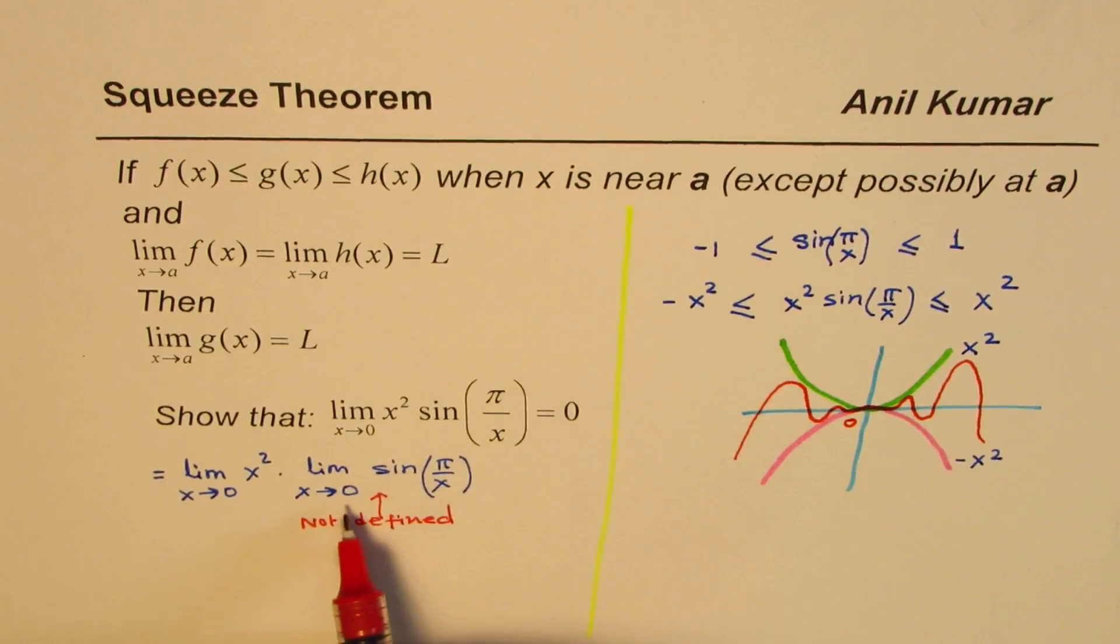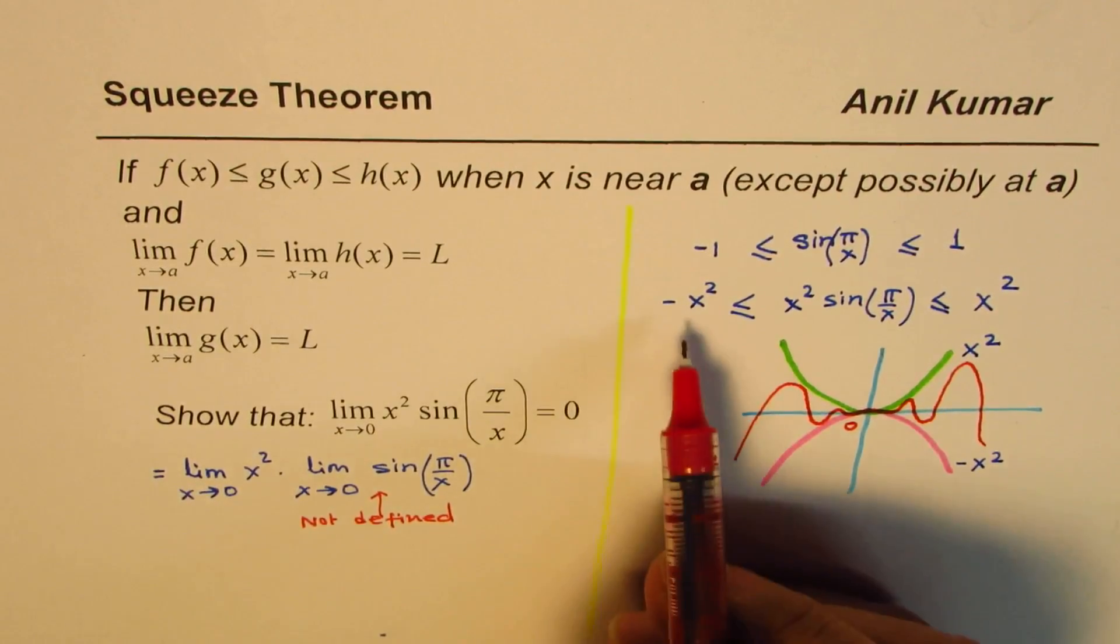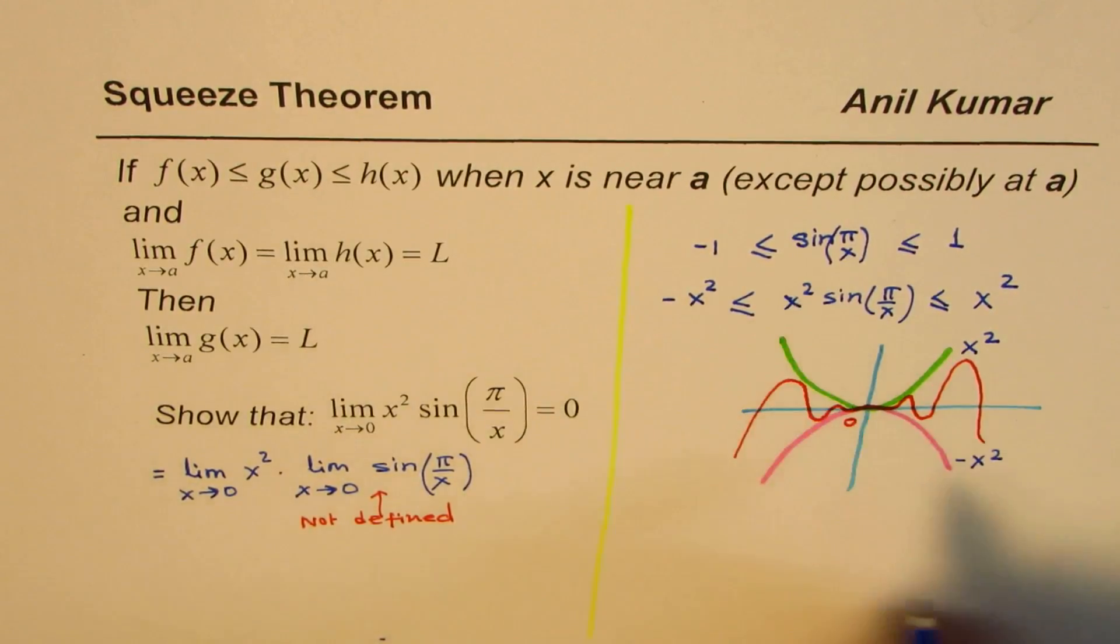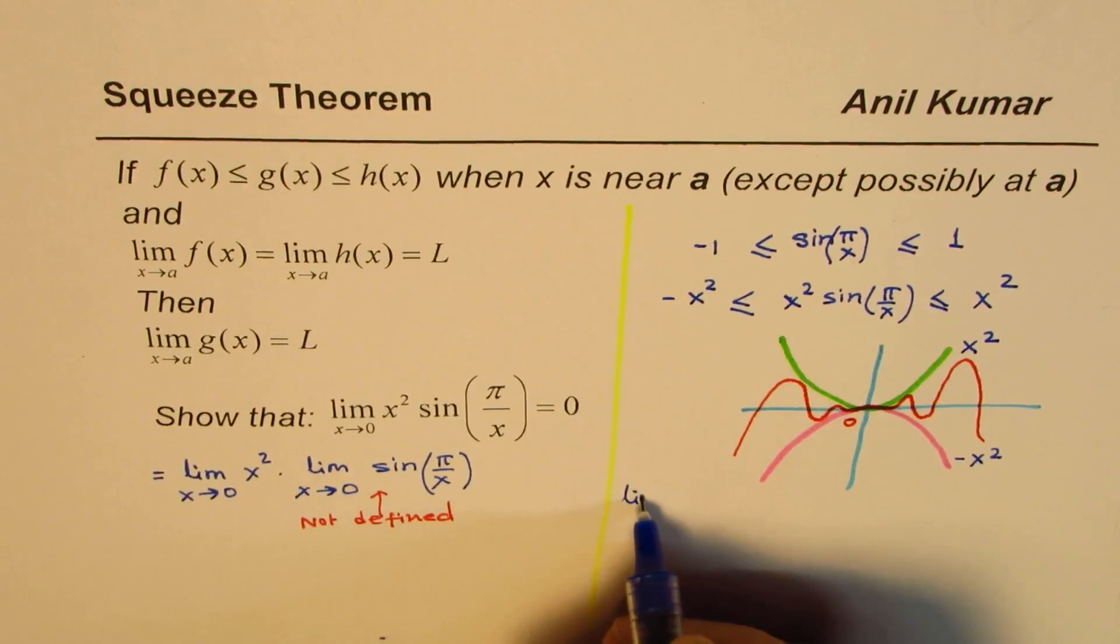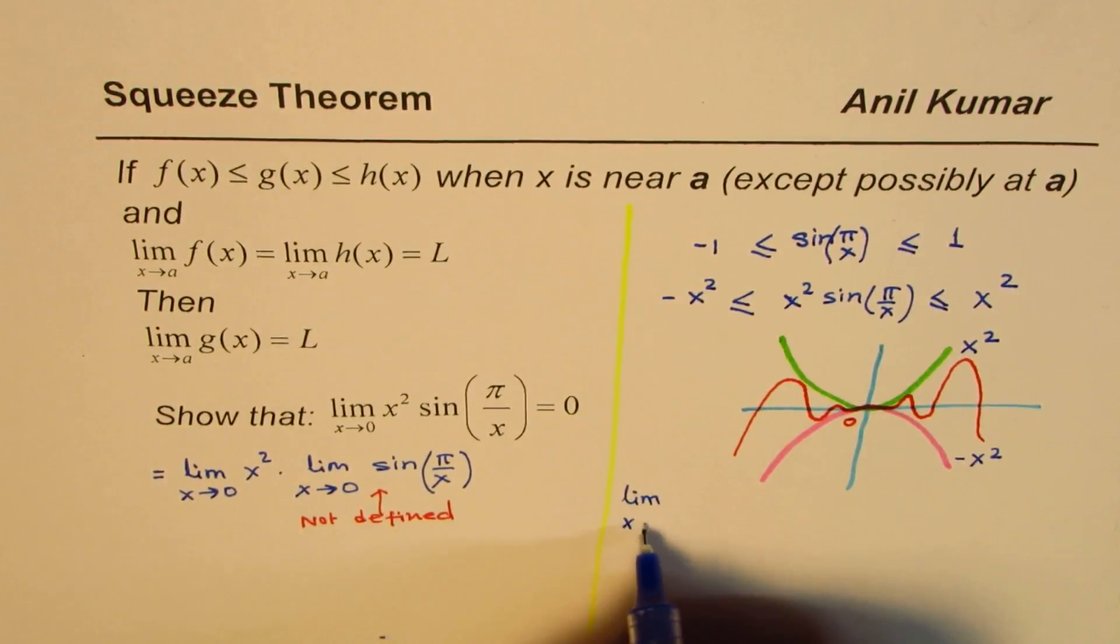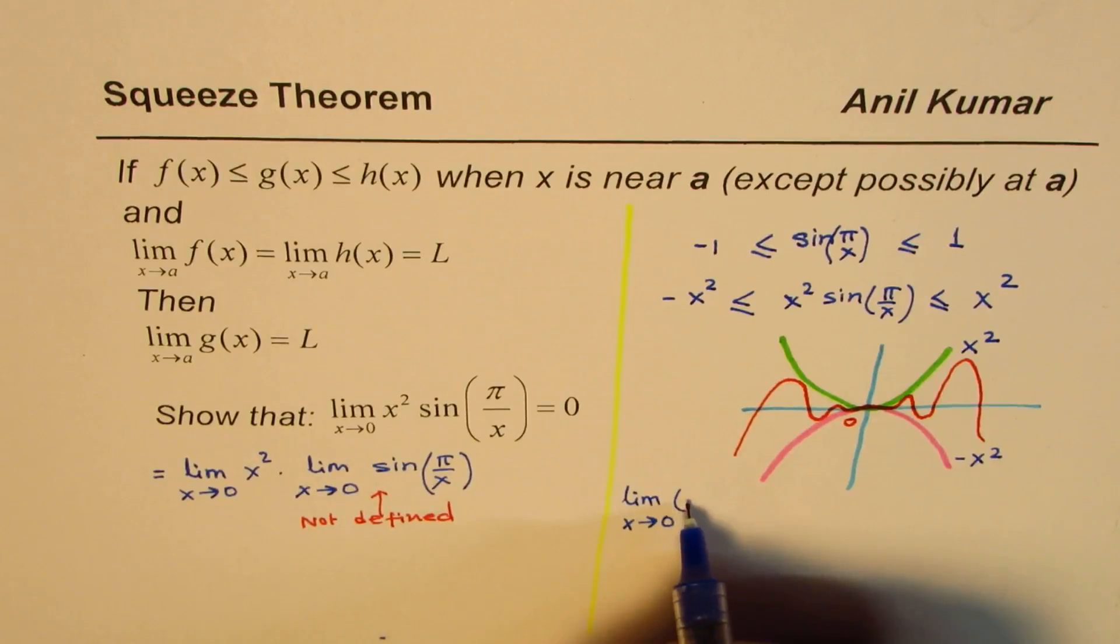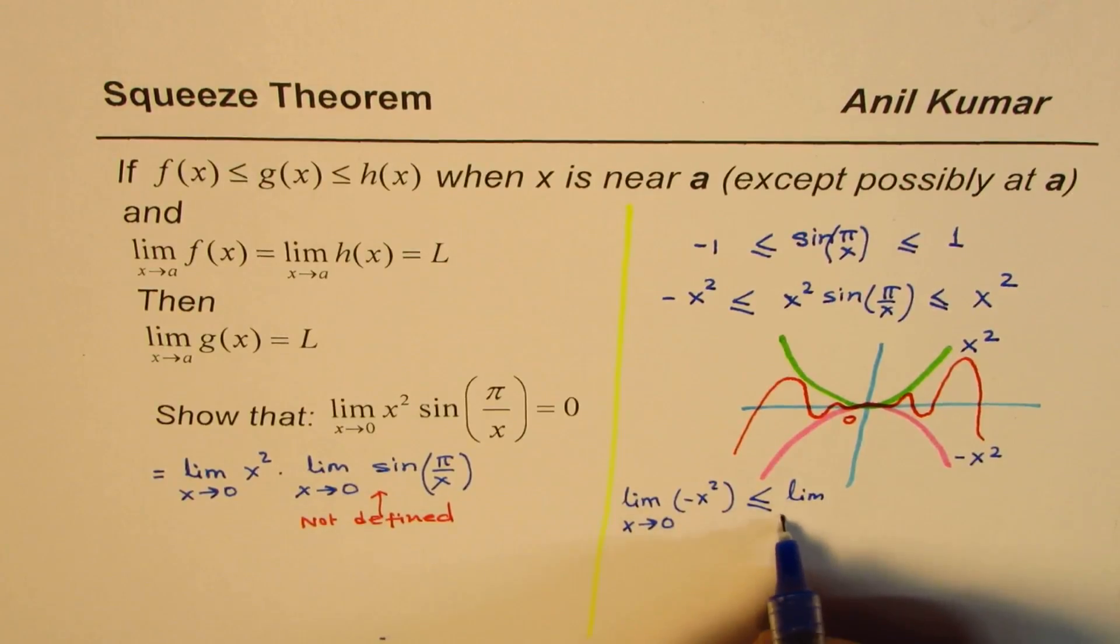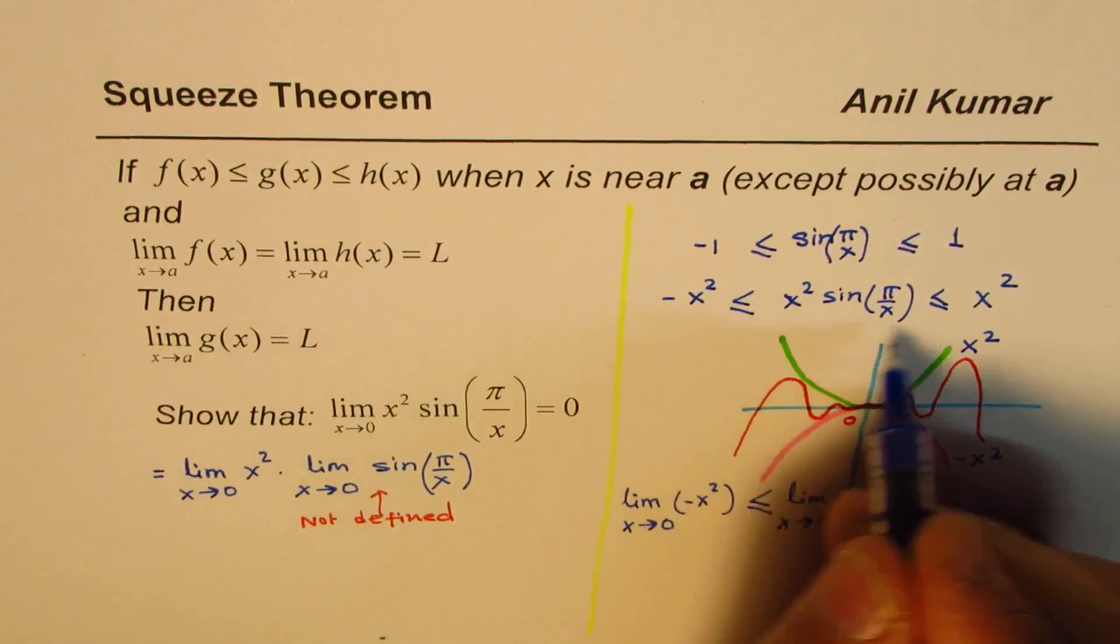So that is what it is. So what we find here is, if I change the statement to the limit statement which we are working on, we could write this as, let me rewrite this.